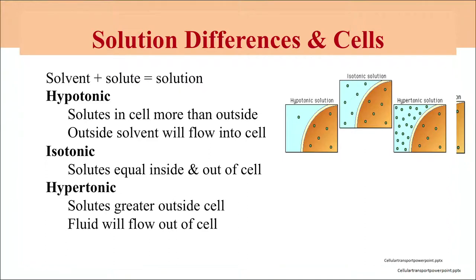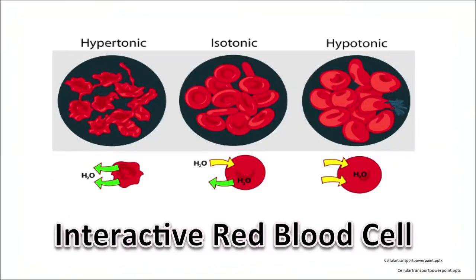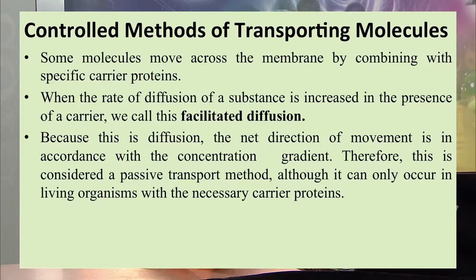A hypotonic solution is one in which the solute concentration is higher inside the cell than outside, so water will flow into the cell. An isotonic solution is one where solute and solvent concentrations are the same inside and outside the cell. In a hypertonic solution, solute concentration is greater outside the cell, so fluid flows out of the cell. For example, in the case of red blood cells: in a hypertonic solution, water moves out and RBCs shrink; in an isotonic solution there is no change; in a hypotonic solution water moves inside and cells swell.